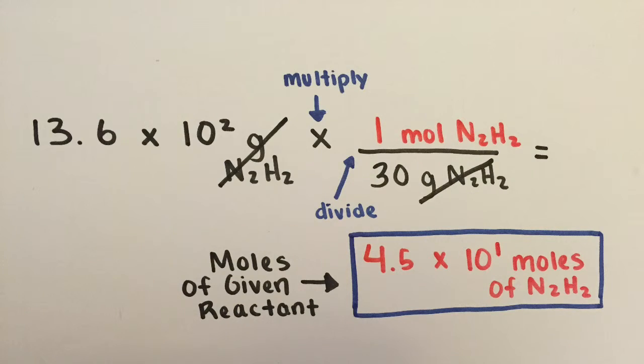Now we cancel out the N2H2 gram unit, multiply 13.6 times 10 to the second power by 1 and then divide by 30. Our new amount is 4.5 times 10 to the first power moles of N2H2.